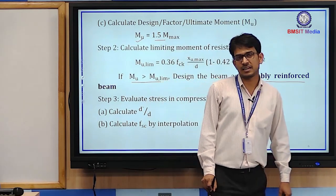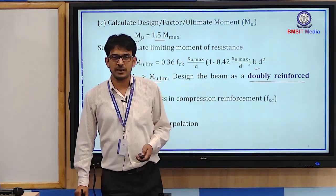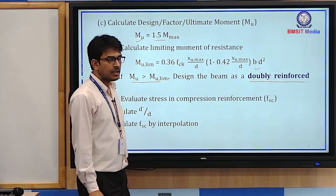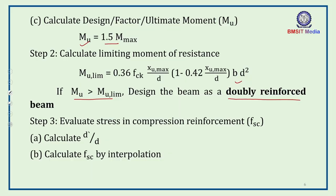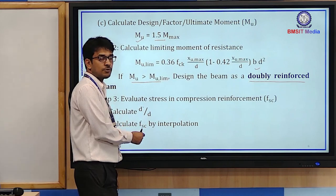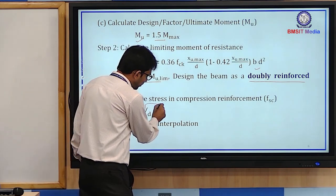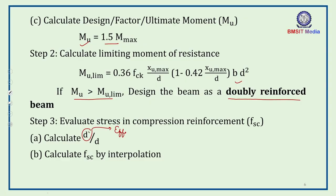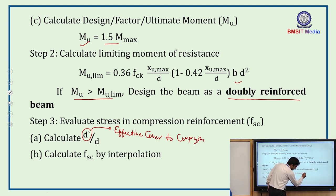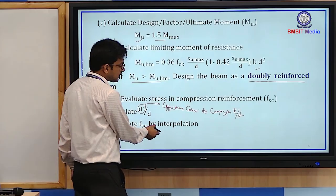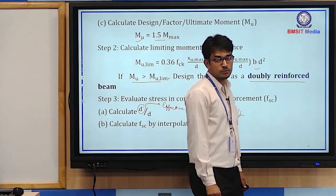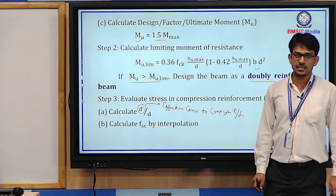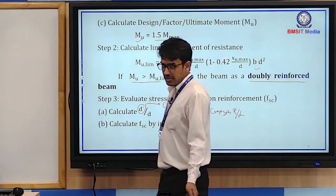If Mu > Mu,lim, only then do we design the beam as a doubly reinforced beam; otherwise we design it as a singly reinforced beam. After confirming doubly reinforced design, Step 3 is to calculate fsc — the stress in the compression reinforcement. For that, we first calculate d'/d, where d' is the effective cover to compression reinforcement. Using interpolation from the IS code table, we calculate fsc.